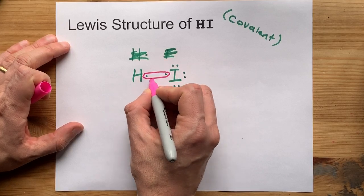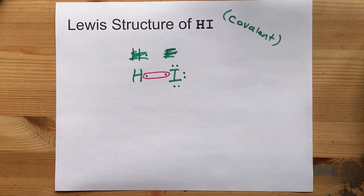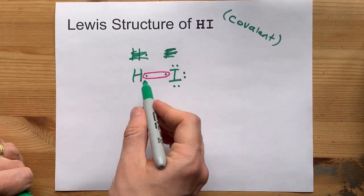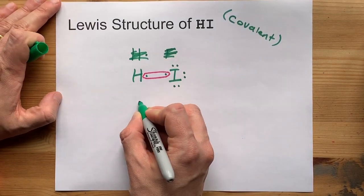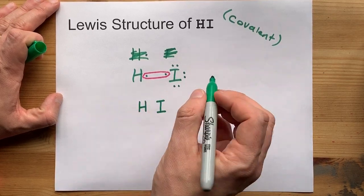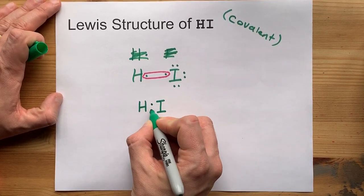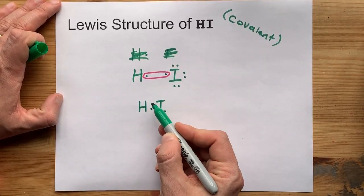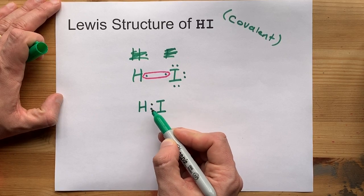These two electrons pair up and spend time in between the two atoms. Now in between is used loosely there. Physically, they could be anywhere around the whole molecule, but whatever. The point is, there's my two electrons, one from iodine, one from hydrogen.